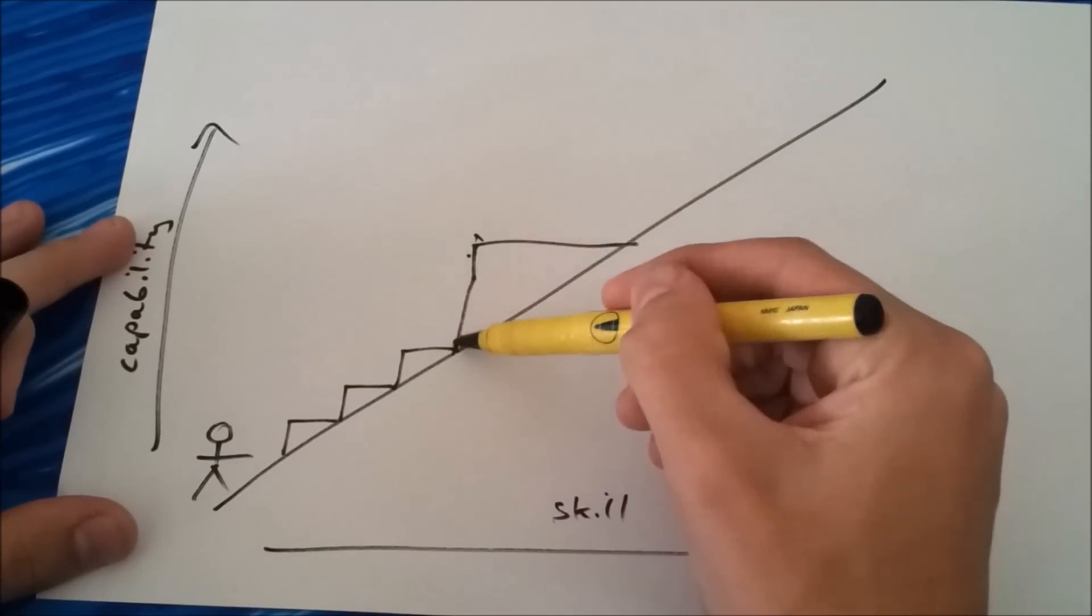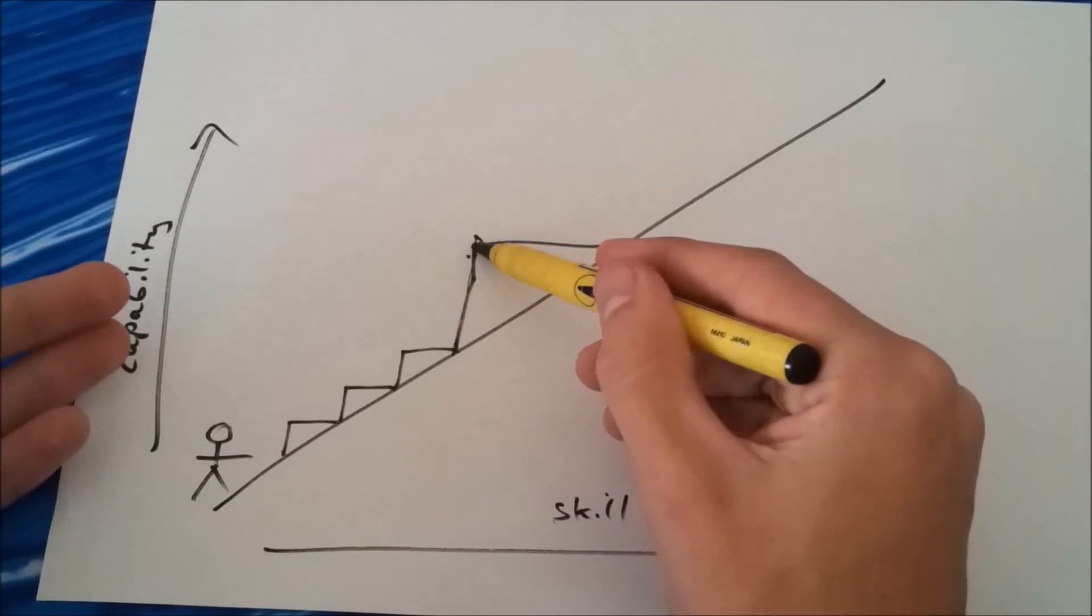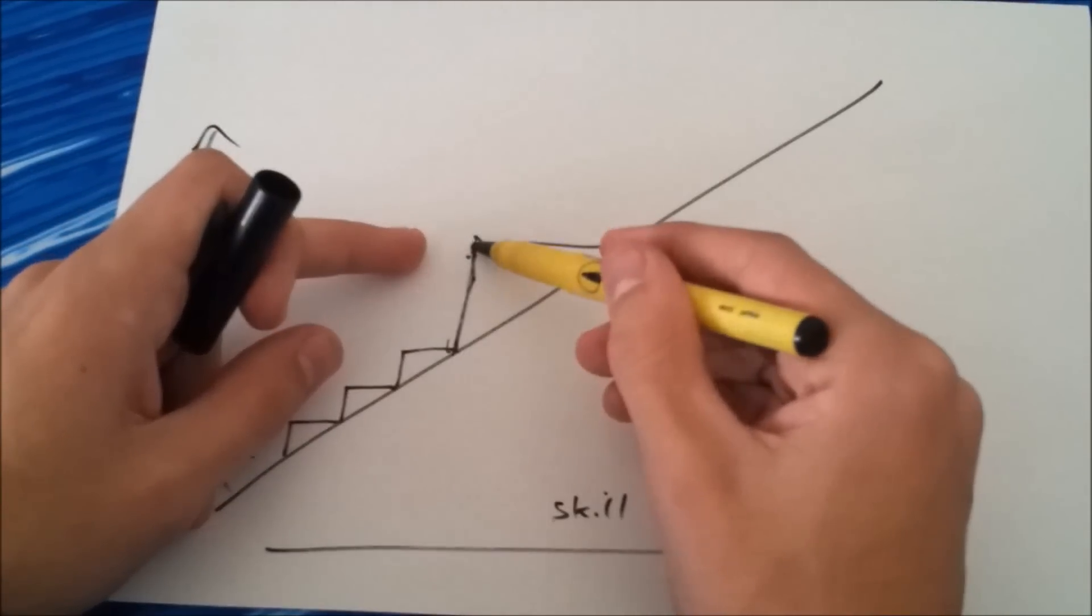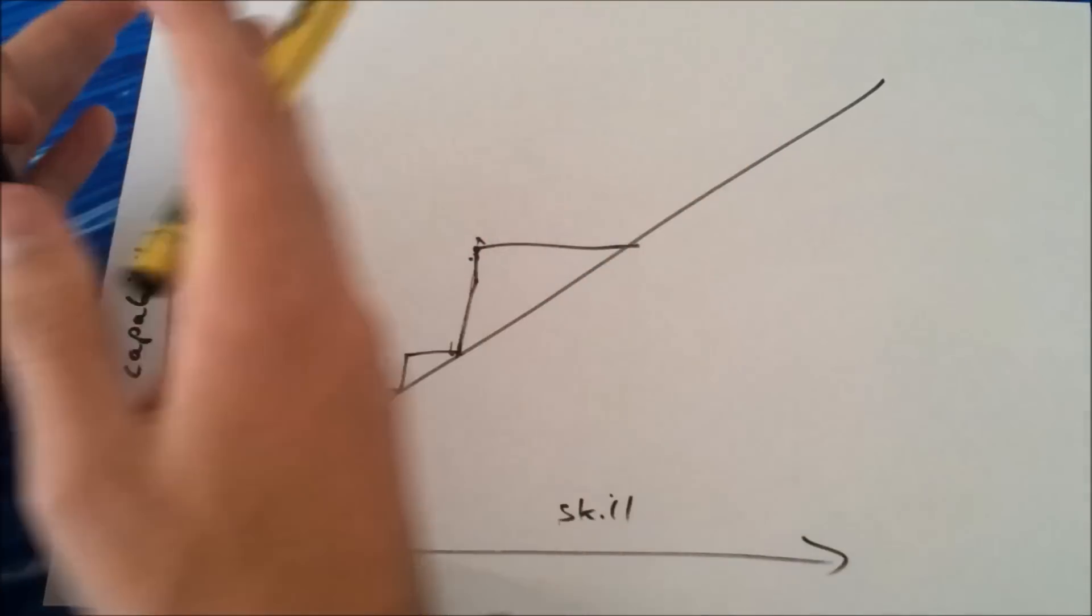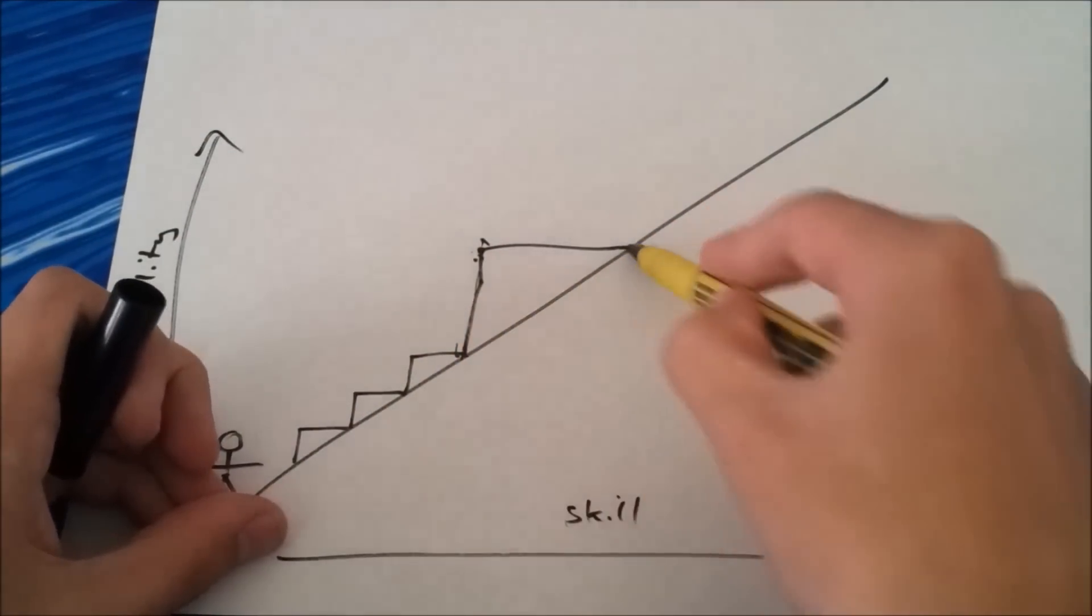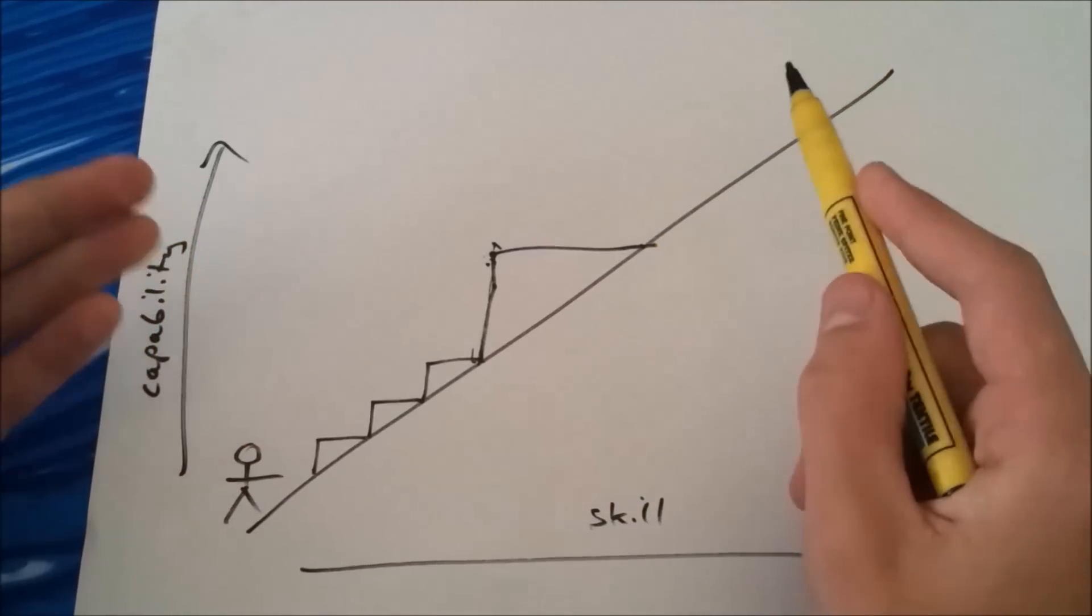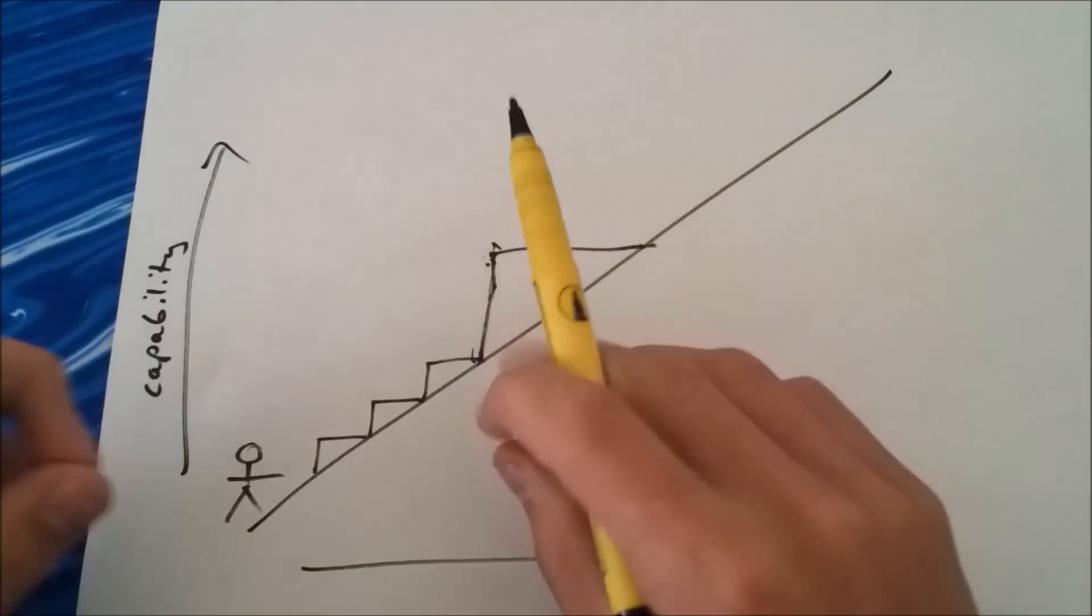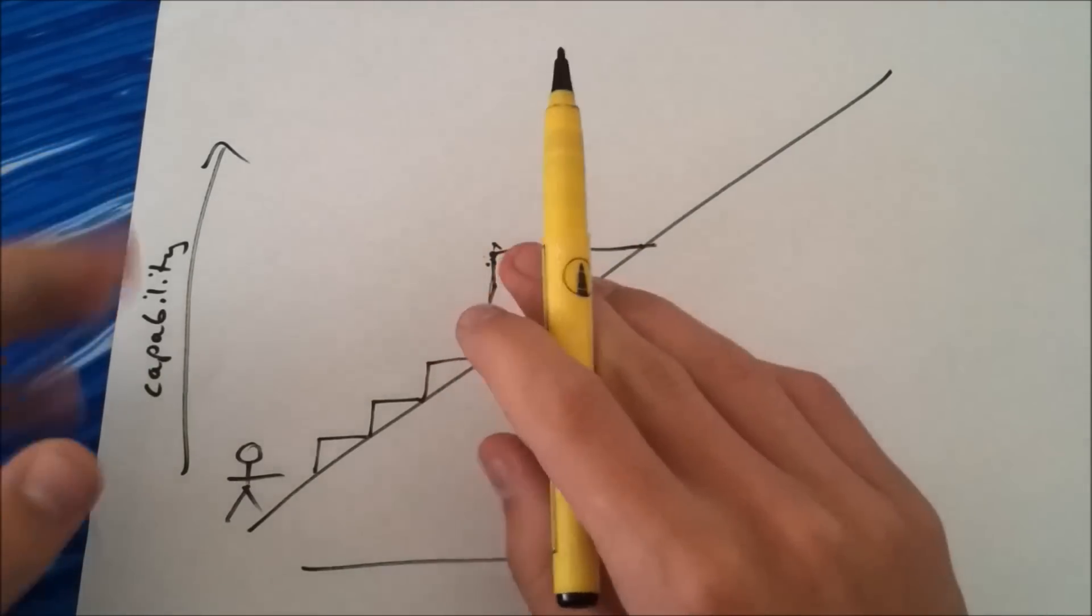And once you learn F2L, obviously you've made it to the top of the step, but you can't really move on, you need to practice it a lot to get to the next sort of step. And solving in different ways as well, doing stuff like slow solving.